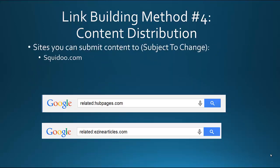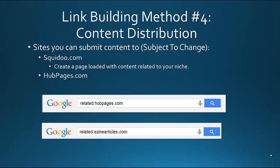Sites you can submit your content to — these are subject to change at any time — but this includes Squidoo.com, where you create a page loaded with content related to your niche market, including RSS feeds from blogs, unique articles, and lists. There's also HubPages.com and EzineArticles.com. These are three of the larger websites where you can create unique content and get a backlink going. You can also do a Google search using the phrase 'related:hubpages.com,' 'related:ezinearticles.com,' or 'related:squidoo.com.' What that does is Google will go and say, 'Here are websites related to EzineArticles,' or 'Here are websites related to HubPages.' These are the three more authoritative ones, but there are many other content sites you could create content for and submit without going through an approval process.